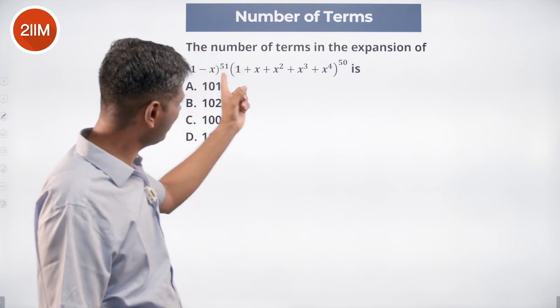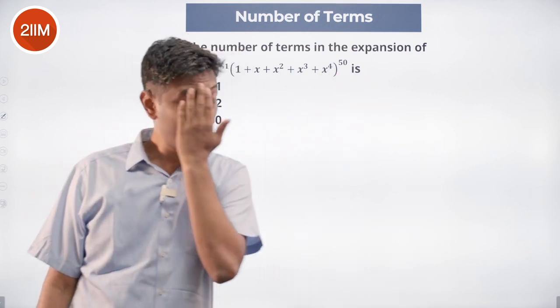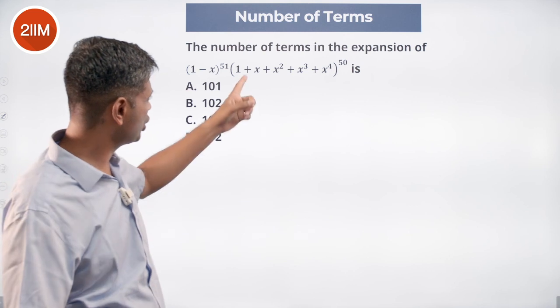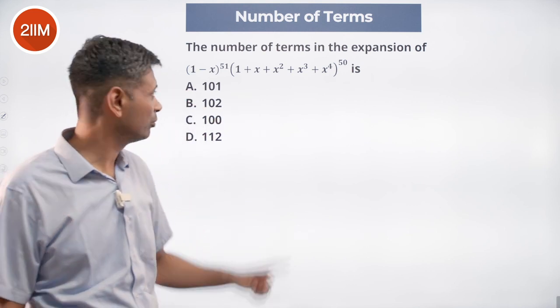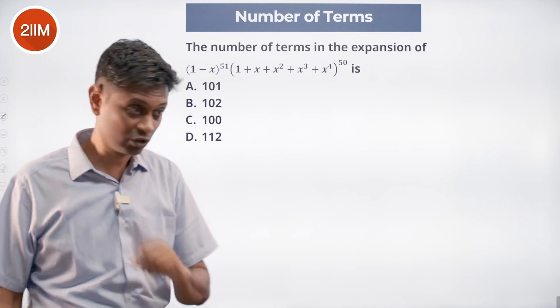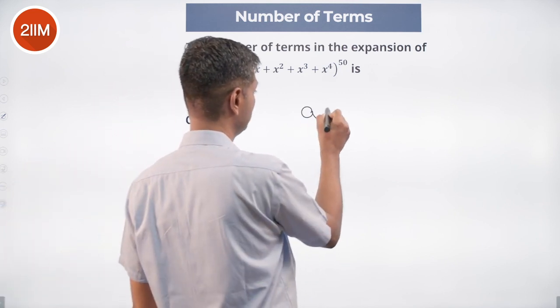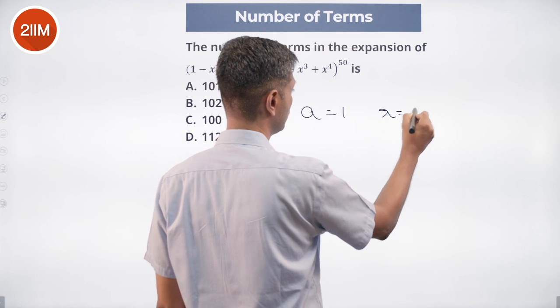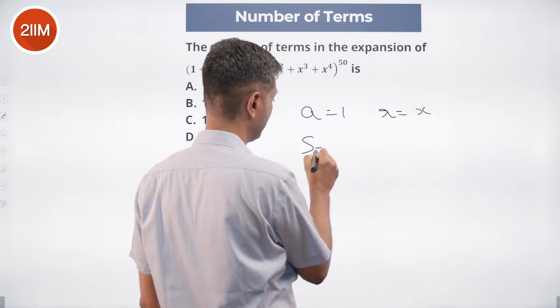Think of this like a geometric progression with the first term 1, common ratio x, and 1, 2, 3, 4, 5 terms. Sum of all of this, you can reimagine. First term is 1, common ratio is x, you want to sum up to 5 terms.